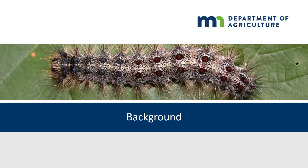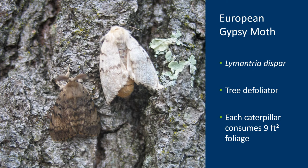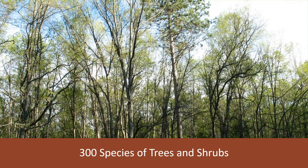Now we will discuss some background information on the Gypsy Moth. The picture shown here is an image of the male and female Gypsy Moth. The male is on the left in brown and the female on the right in white. The scientific name for the Gypsy Moth is Lymantria dispar. This is a pest of concern because of the heavy tree defoliation the pest can cause. Each caterpillar can consume a cubic square foot of leaves in its short lifespan. Here is a picture of an area that has suffered heavy defoliation from an infestation of Gypsy Moth.